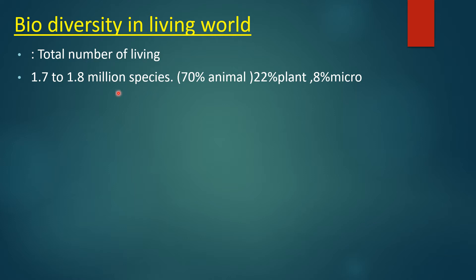1.7 to 1.8 million species — यहाँ मैंने specially 'species' word का use किया है. Species means एक type के organism की एक ही variety होनी चाहिए. For example, wheat को लेते हैं. Wheat में अगर हम different varieties देखते हैं तो उसमें Lokwan, Sharbati, Sonali, WR 147 जैसी varieties हैं — लेकिन classification में हमने सिर्फ एक को include किया है: wheat. इस type से इतनी सारी species large quantity में earth पर present हैं और search out की गई हैं.